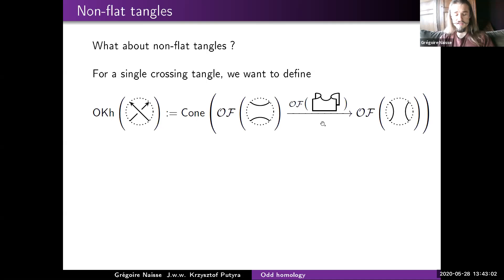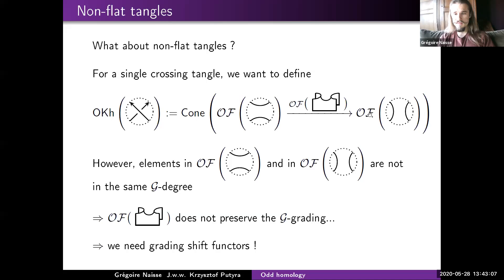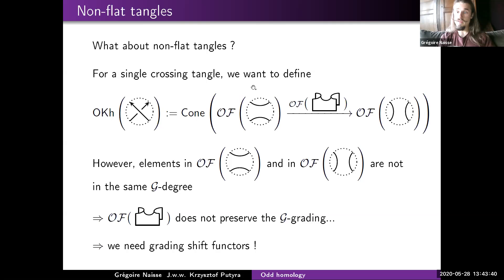However, you will quickly see an issue: elements in one space have a degree where the tangle part is of one shape, and elements in the other space have a degree where the tangle is a different shape. Since a graded map must preserve the C-degree, the only graded map from one to the other is the zero map. They live in different degrees. To fix this, apply a grading shift functor to push elements into the same G-degree.